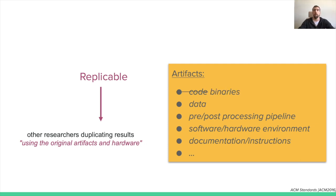Note that in some cases, when intellectual property rules do not allow you to share the code — for instance, when companies are involved — the authors can share pre-compiled binaries. As long as the piece of software can be used properly to duplicate the results, this does not affect replicability. This may, however, question the evaluation of the contribution and results, as there are some hidden parts. But at least we can elaborate future work on the proposed pipeline.